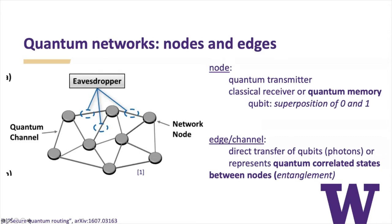In quantum information science and technology, nodes can be two things. One is simply a quantum transmitter — something that transmits quantum states, which would naturally be photons. By quantum states, we mean they can be in a superposition of 0 and 1, i.e., a qubit, and these can be entangled between different directions and then detected classically. Nodes can also consist of a quantum memory, where a qubit can store quantum information. For most of my talk, I'm interested in defects as a quantum memory in these nodes.